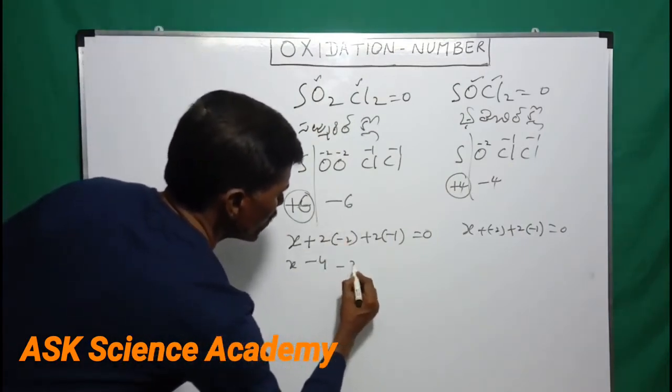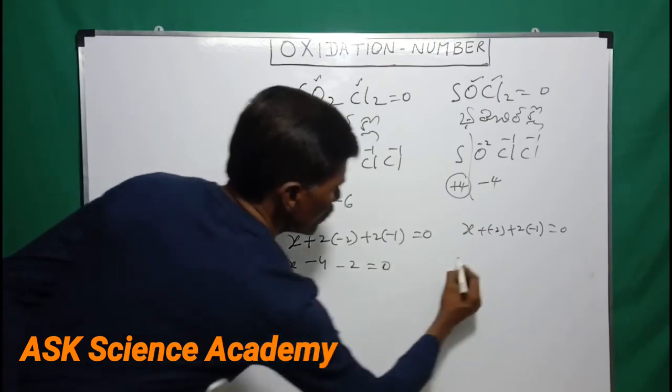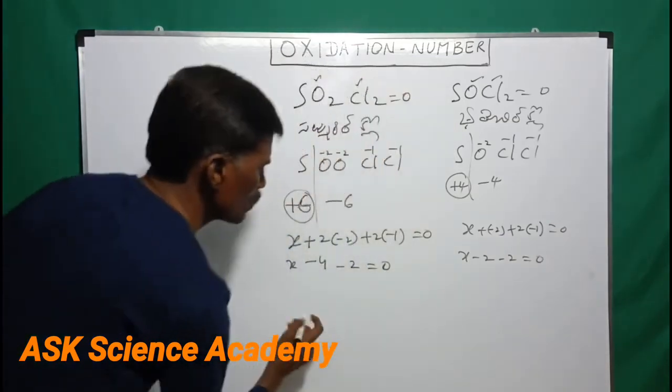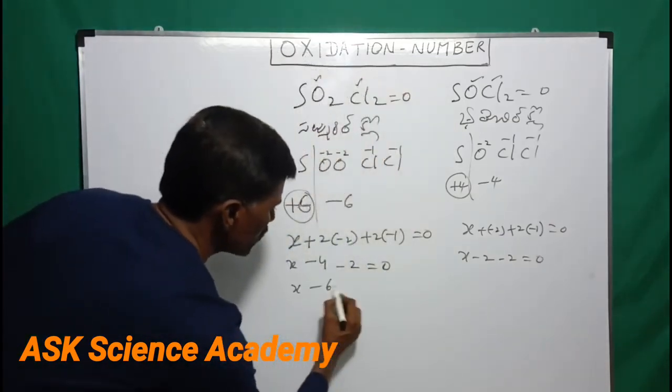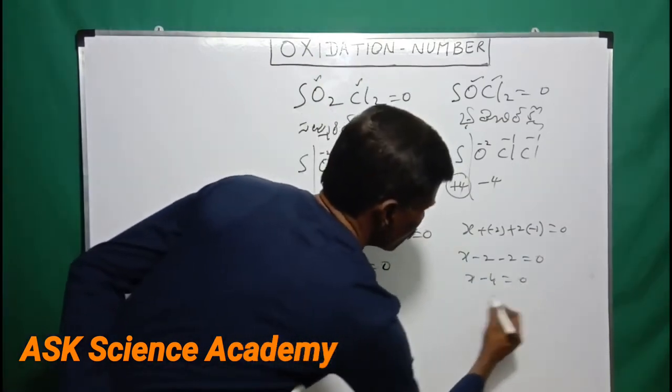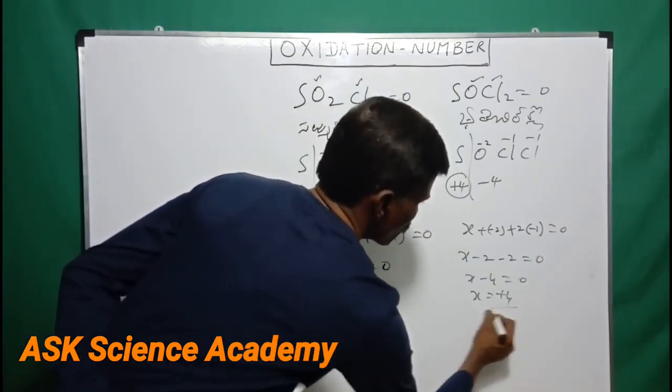x minus 4 minus 2 equal to 0. x minus 2 minus 2 equal to 0. Then x minus 6 equal to 0, x equal to plus 6. x minus 4 equal to 0, x equal to plus 4.